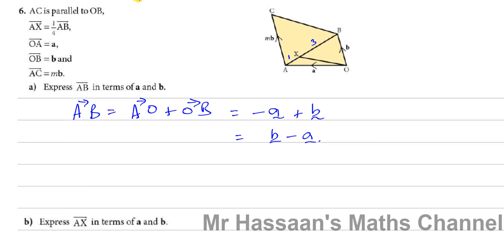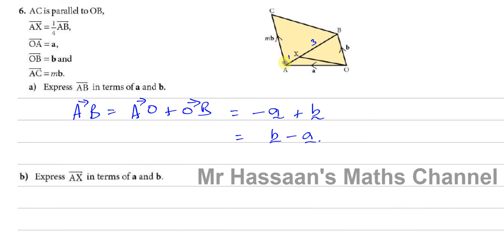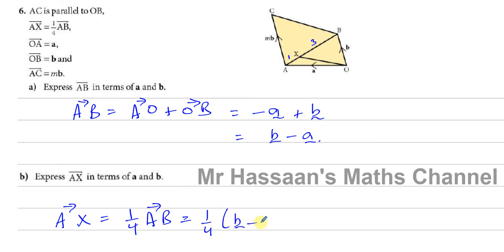Part B says: find the vector AX. AX is parallel to AB but not the same length — in fact AX is a quarter of AB as stated in the question. So we can say AX equals one quarter of AB. We just found AB, so AX equals one quarter times (b minus a), which is one quarter b minus one quarter a. You can leave it factorized or expanded — both are perfectly fine.